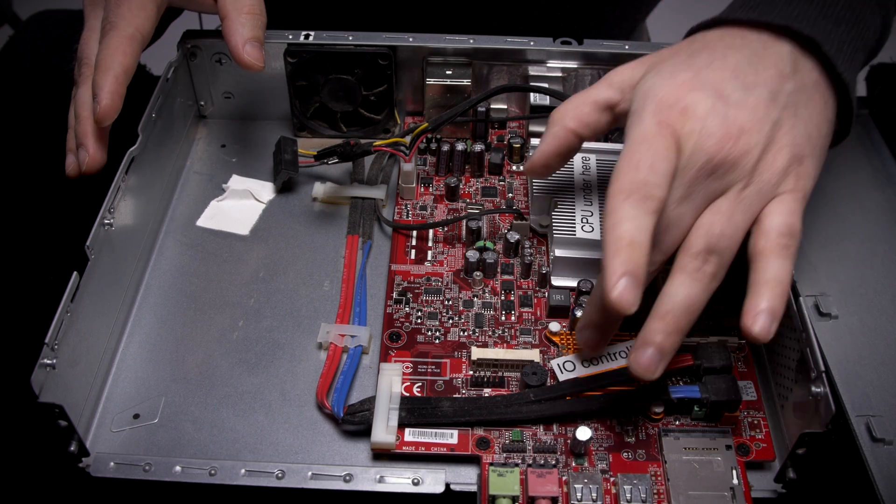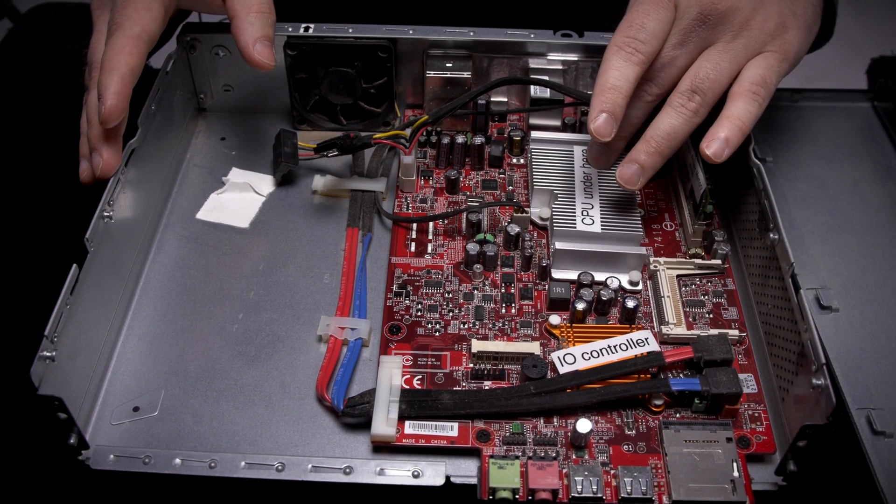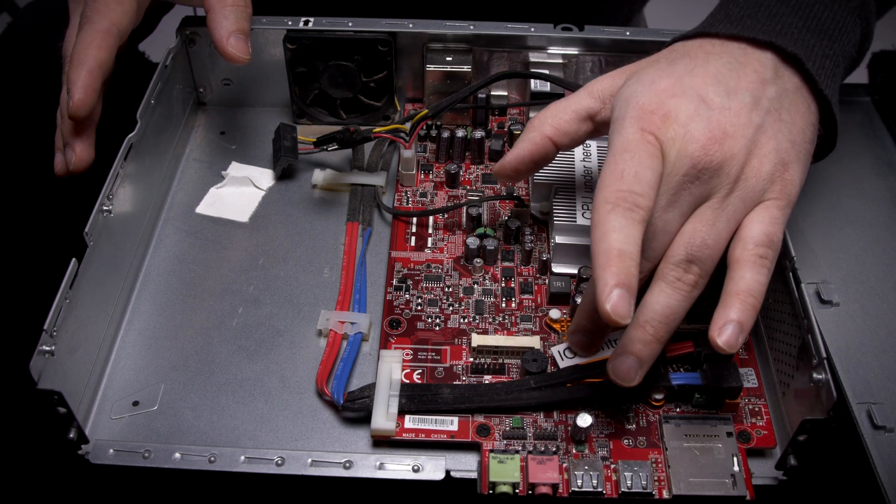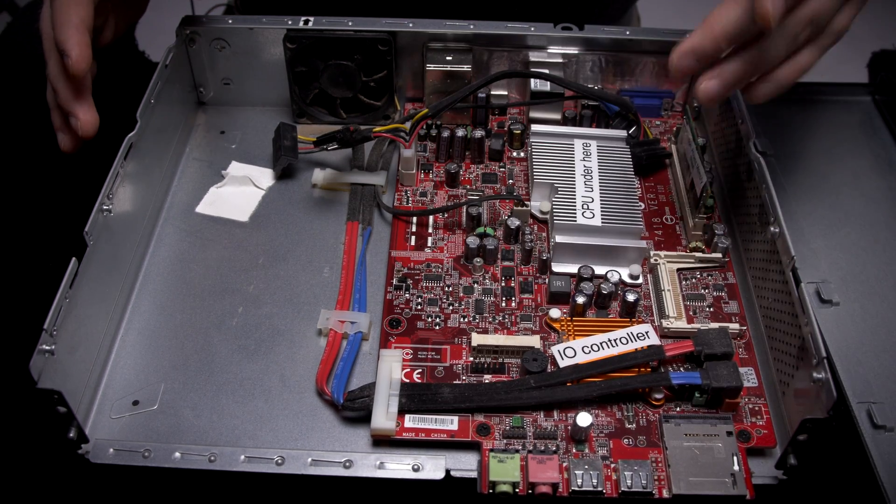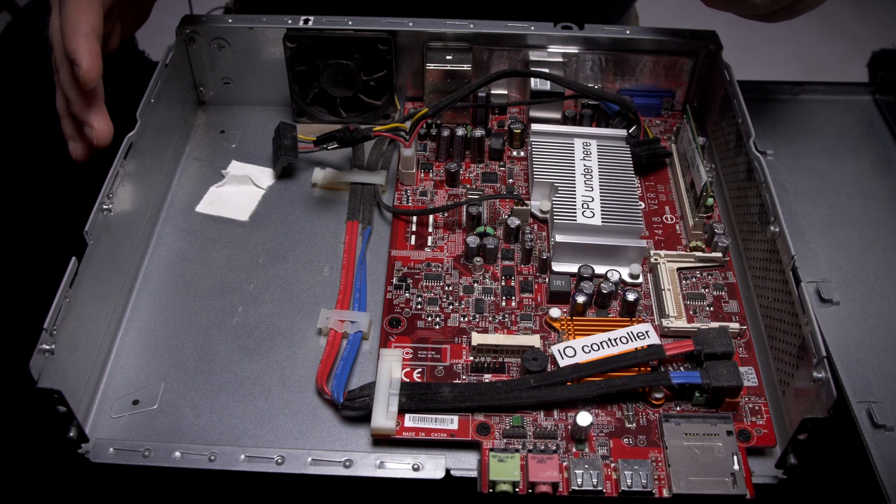The other two main things on the main board are the IO controller and the CPU. The IO controller stands for input-output controller. It's a chip that governs all of these ports, so it doesn't actually do the computing either.